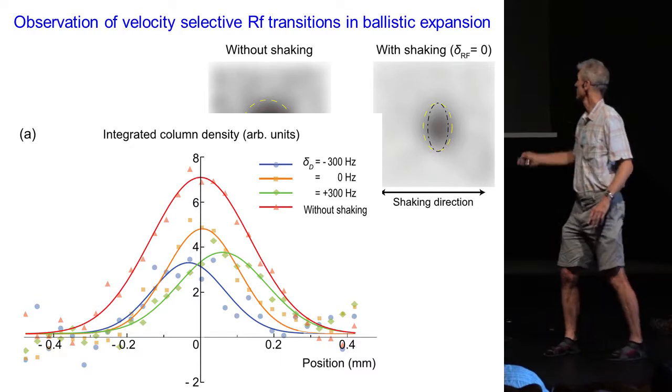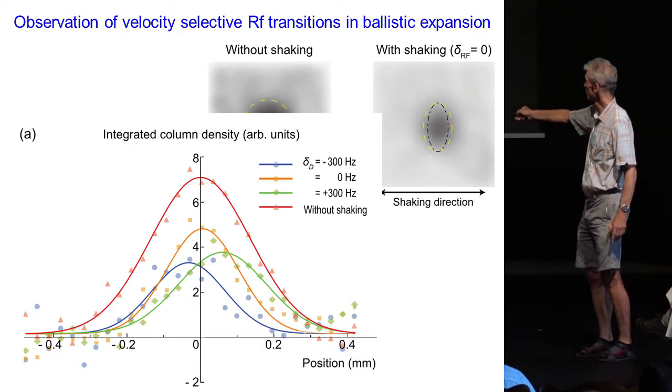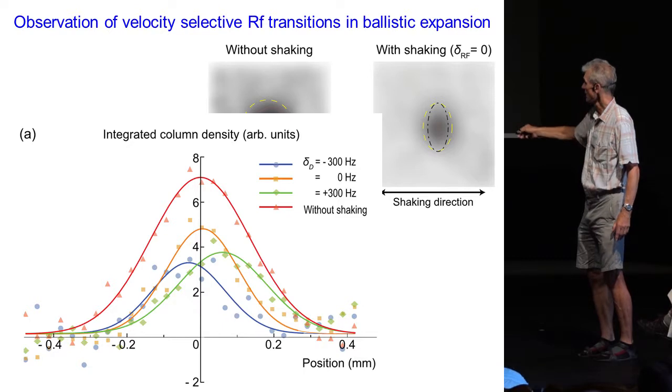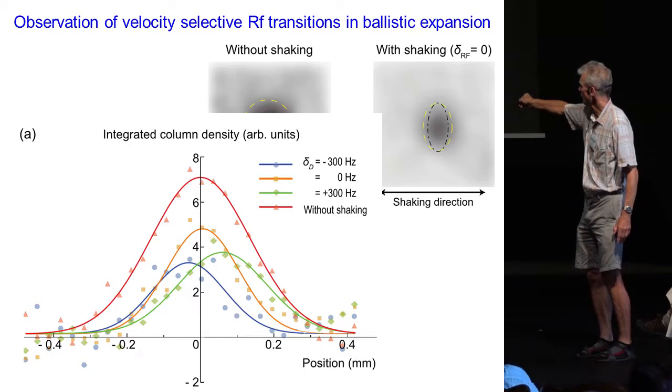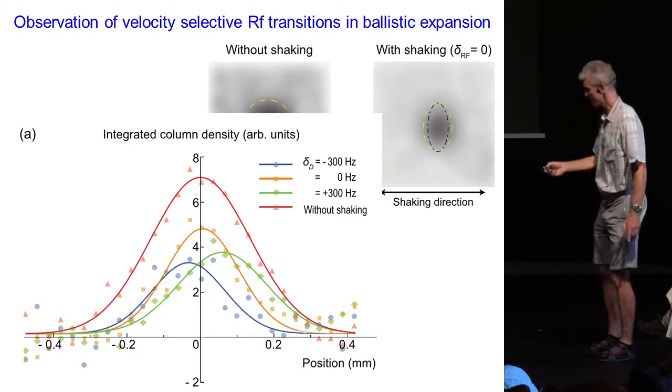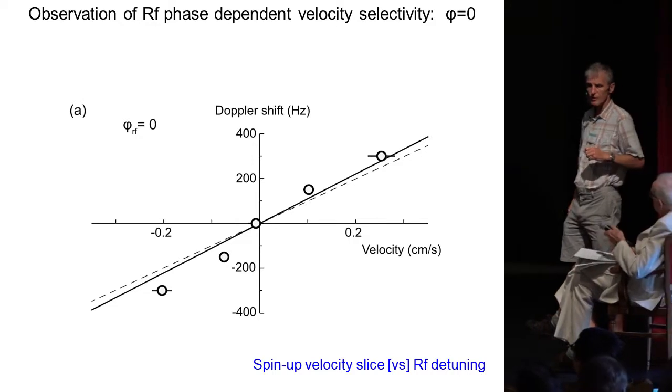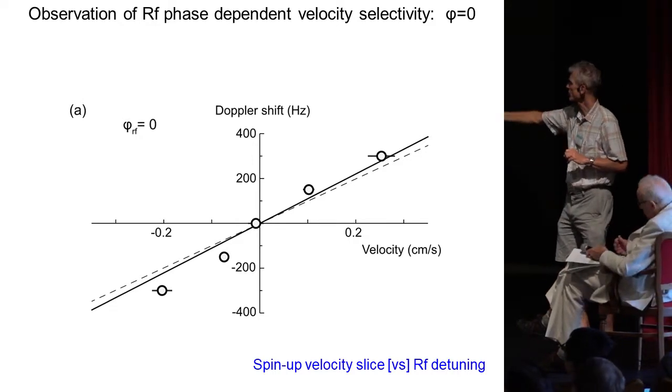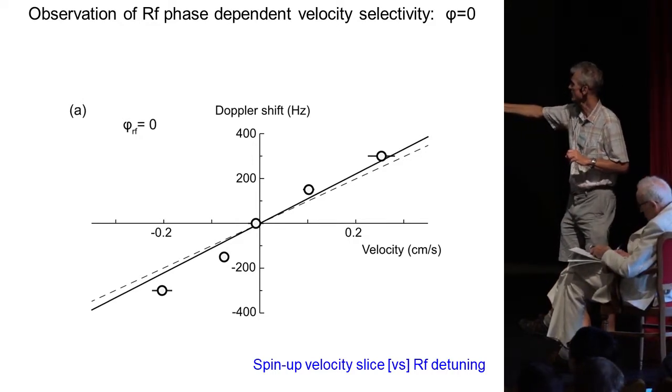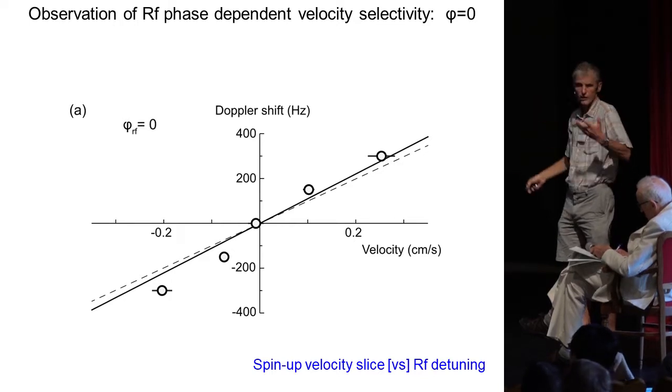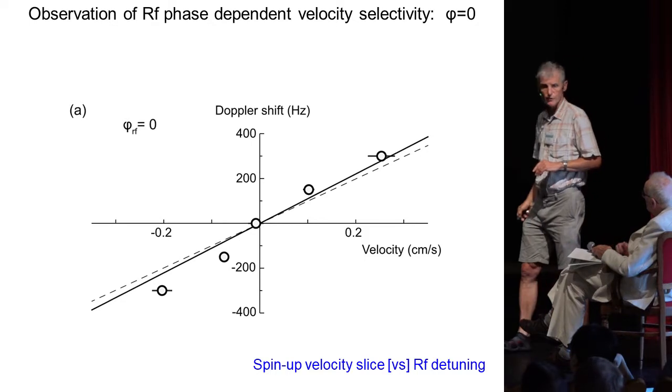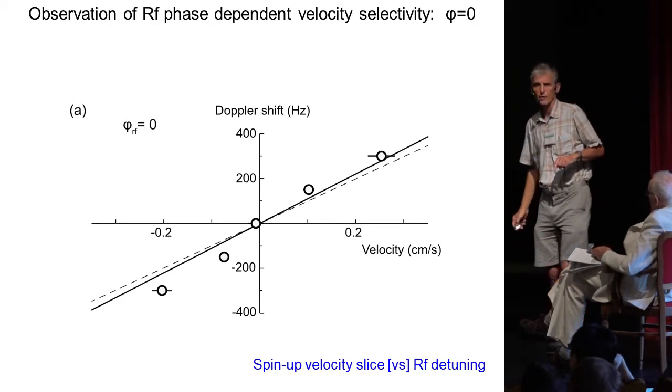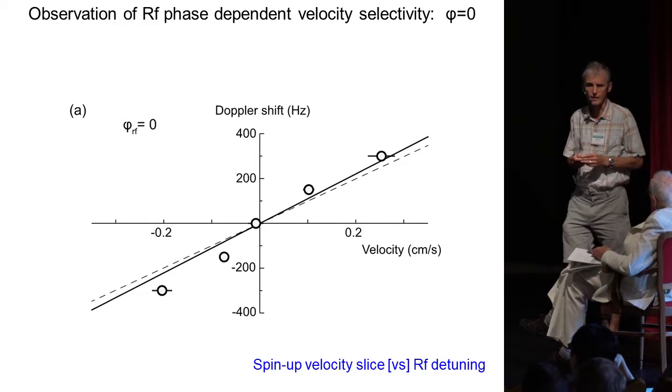We can have different frequency detunings, and you see here that for one detuning, you are in resonance with the left part or with the right part of the velocity distribution. And if you determine as a function of frequency, which is the central velocity for which we have a spin flip, you indeed find that there is a Doppler shift. And the Doppler shift agrees with the calibration of the magnetic gradient.